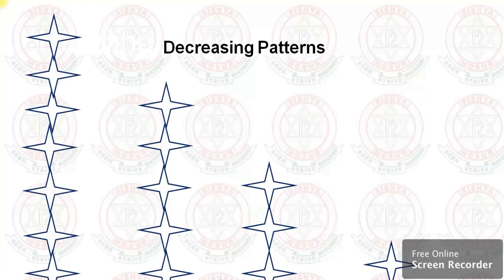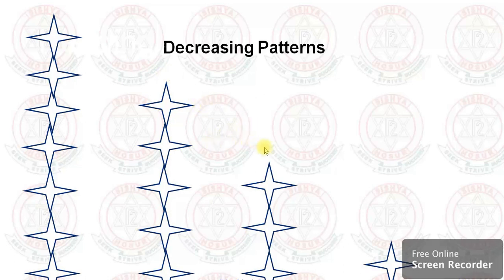Next is decreasing — it is opposite to increasing, it will reduce. Here you can see stars: three, four, five, six, seven stars. But in the next step there are only five stars, so two stars were reduced. Then again two stars were reduced.